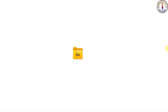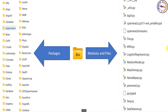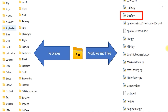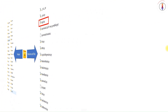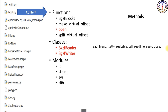Let me show you the BioPython hierarchy once again. Here is the bio package. It contains these sub-packages and these modules. Here is the BGZF module. Modules are actually text files with .py extensions. This module has these functions, these two classes, and these are the modules that are imported during the use of the BGZF module. Here are the methods in the BGZFReader class, and these are the methods of the BGZFWriter class.